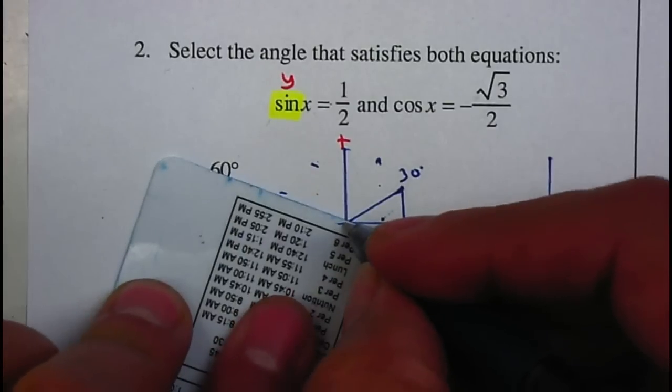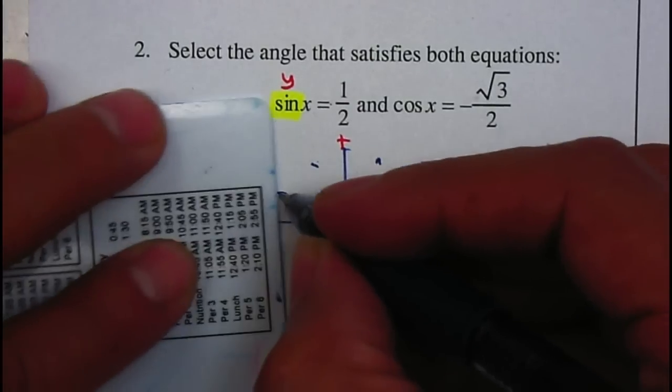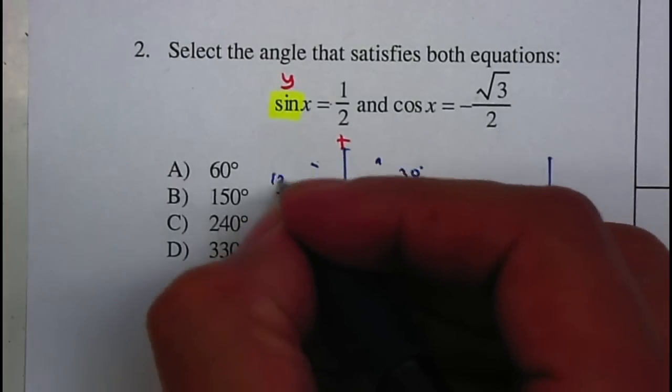Or it can be at this one here, your y value is your shorter side, so it can be 150.